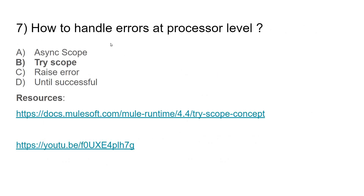The seventh question is: how to handle errors at the processor level? We know we can handle errors at the flow level or maintain a global error handler, and the Mule default error handler can also handle errors if you don't maintain any. But if you want to handle errors at the processor level itself, you have to use the Try scope. I have given a few resources you can check.